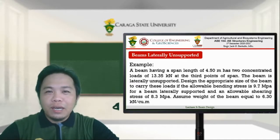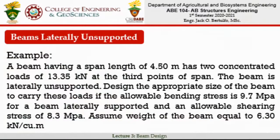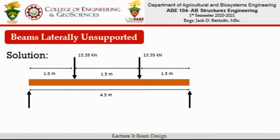Here is the illustration of the diagram for the problem. You have concentrated loads located at the third points — at 1.5 m intervals — so the beam is divided into three equal segments of 1.5 m each. Both concentrated loads are 13.35 kN. Although the problem states it is laterally unsupported, we will verify using the formula presented.